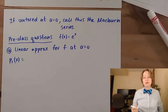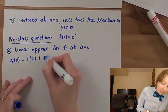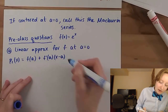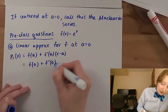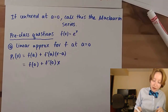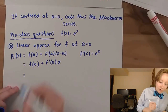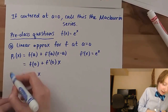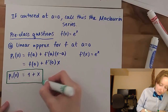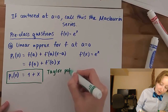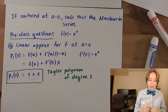So p_1(x), the first Taylor polynomial, going out to the first power of x, is f(a) + f'(a)/1! · (x−a) where a equals 0. Plugging in: f(0) + f'(0)·x. Since f(x) = e^x, f'(x) = e^x, and evaluating at 0 gives 1. Also f(0) = 1. So the first Taylor polynomial is 1 + x, a polynomial of degree 1.